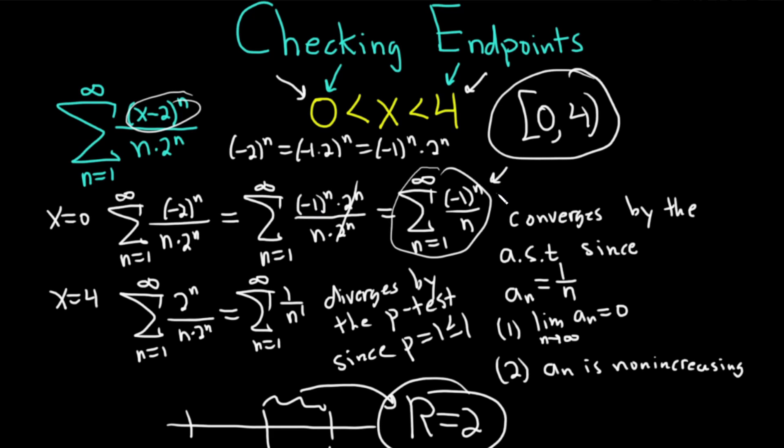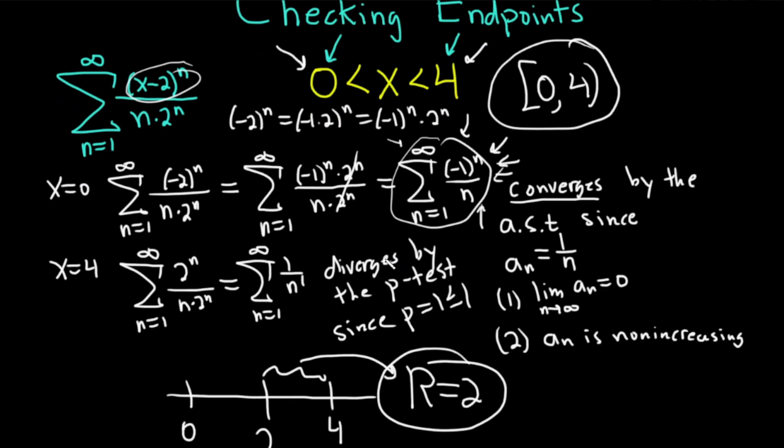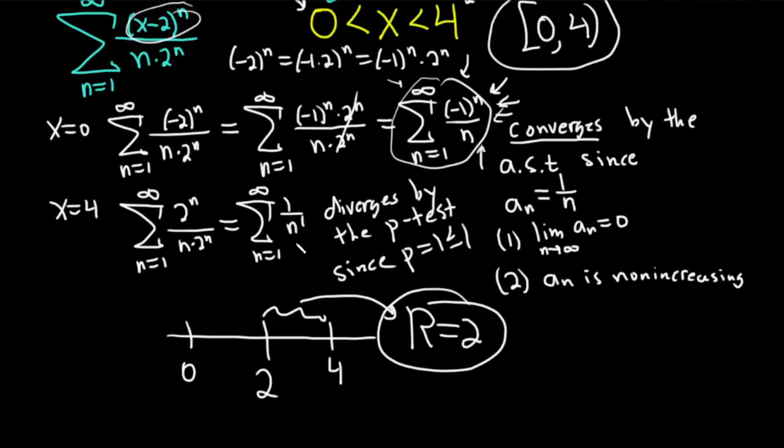When you get here, this is where all of your series knowledge comes into play. This is the very last step. You just have to decide if it converges or diverges. In this case, you know it's a very common convergent alternating series. Same thing over here. In this case, we got 1 over n. So this is the harmonic series, which diverges. Or you can invoke the p-test.